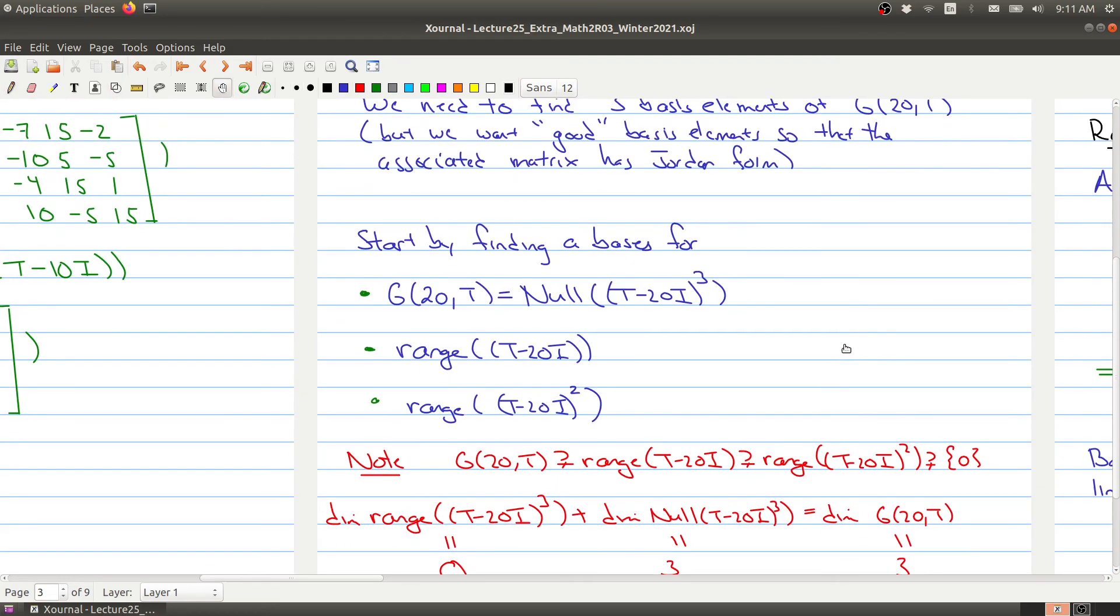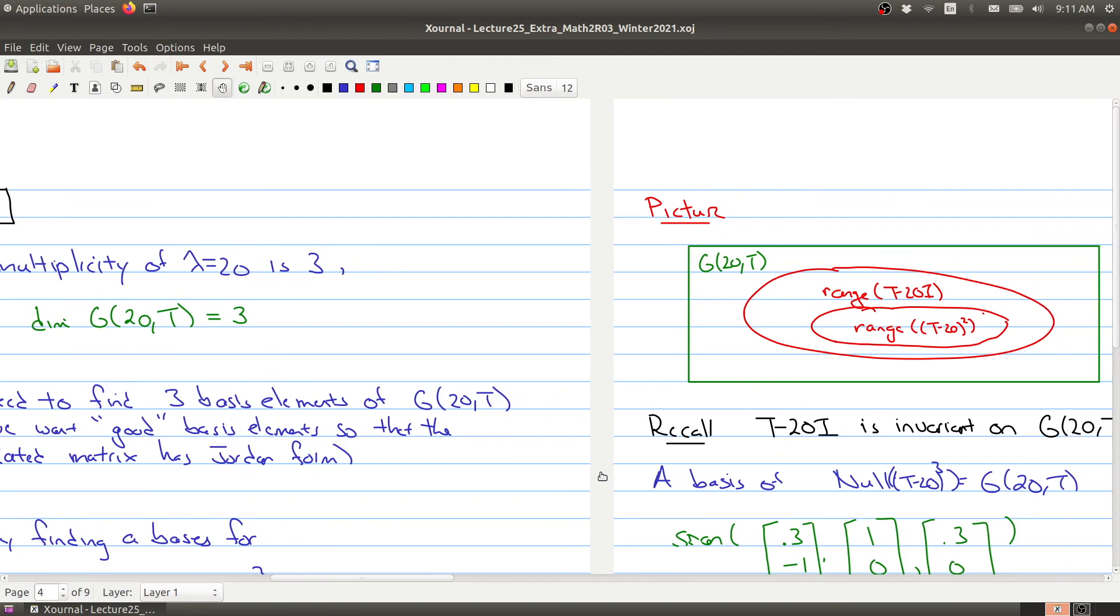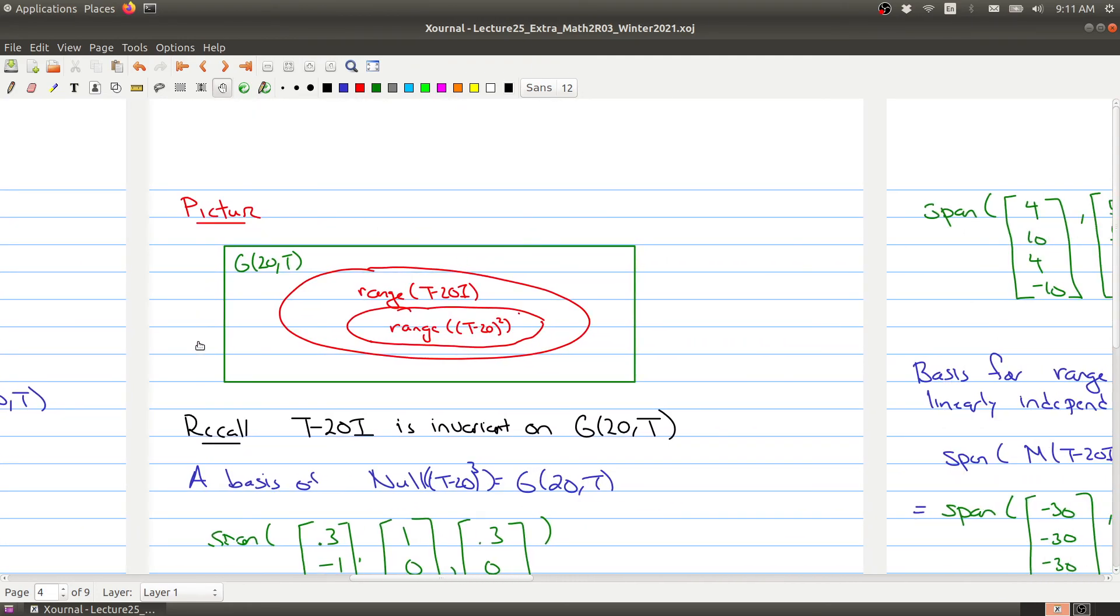Okay, so we'll end off this part here with just a picture, and then we'll come back. So just to kind of recap here, we have our generalized eigenspace. Inside of it sits the range of the operator, t minus 20i, and sitting inside of that is the range of t minus 20i squared. And then sitting inside of that is the zero subspace. And the reason we have this picture is because the operator, t minus 20i, is invariant on this space. So when you apply this operator to anything inside of here, you're getting something that bounces back into the space. And then you get something that bounces back into that space, but smaller. In each step, we're getting something smaller and smaller. So we'll pause here, and I'll get ready for part two.